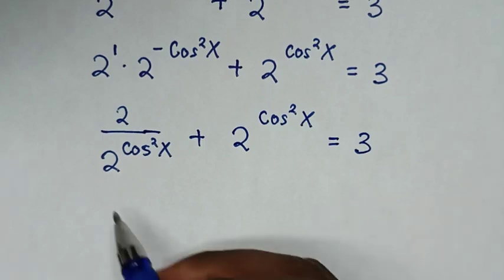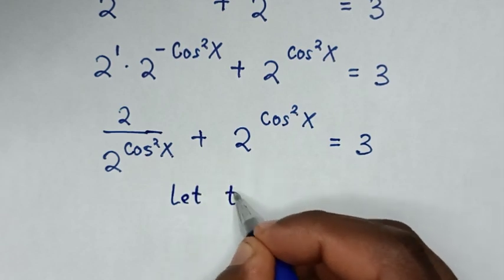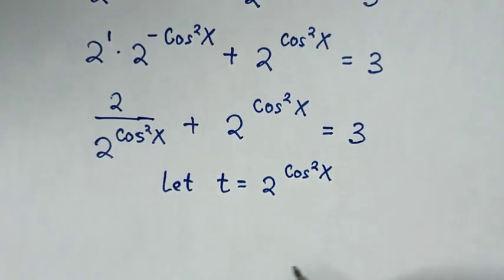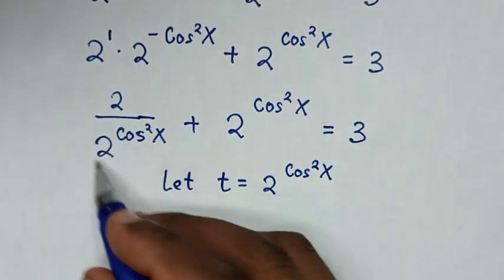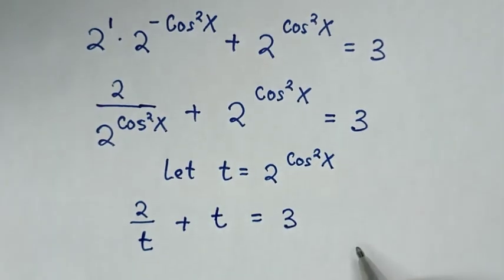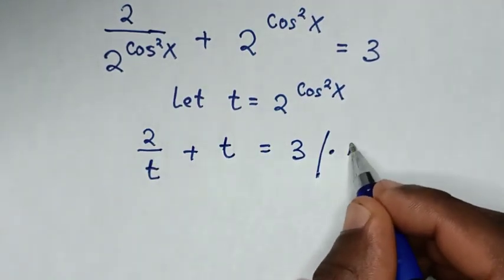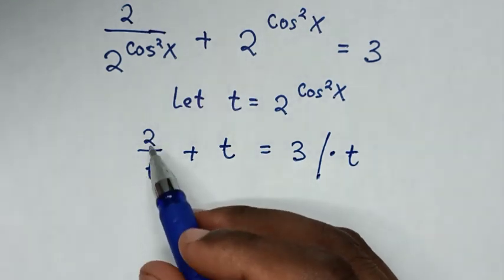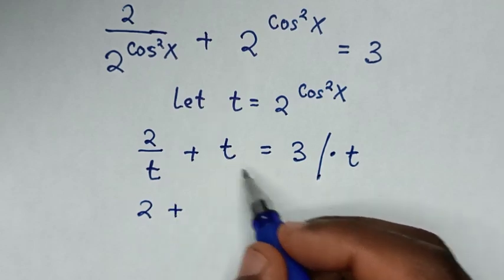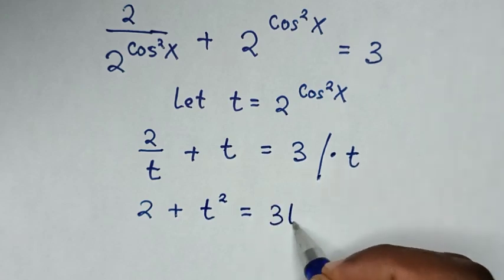In the next step, 2^(cos²x) is common, so we let t = 2^(cos²x). The equation becomes 2 over t plus t equals 3. To cancel the denominator we multiply the whole equation by t, giving 2 plus t² equals 3t.